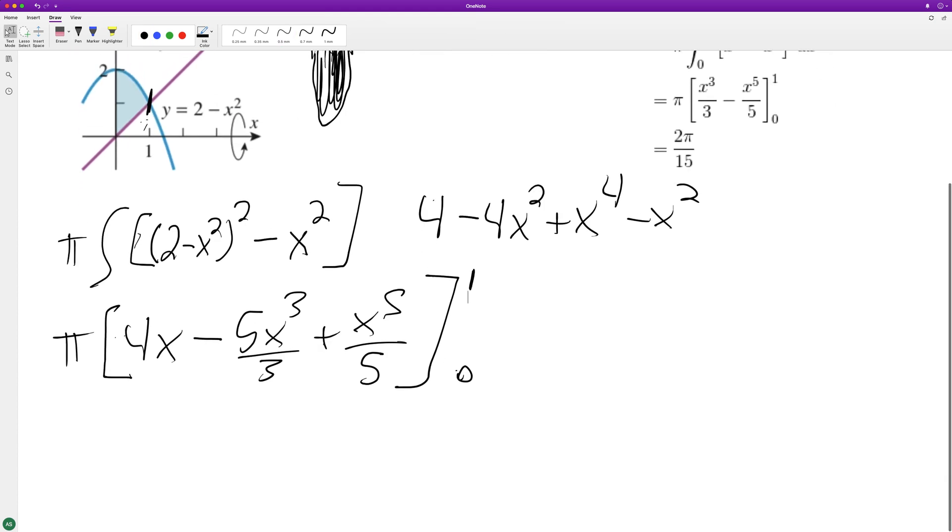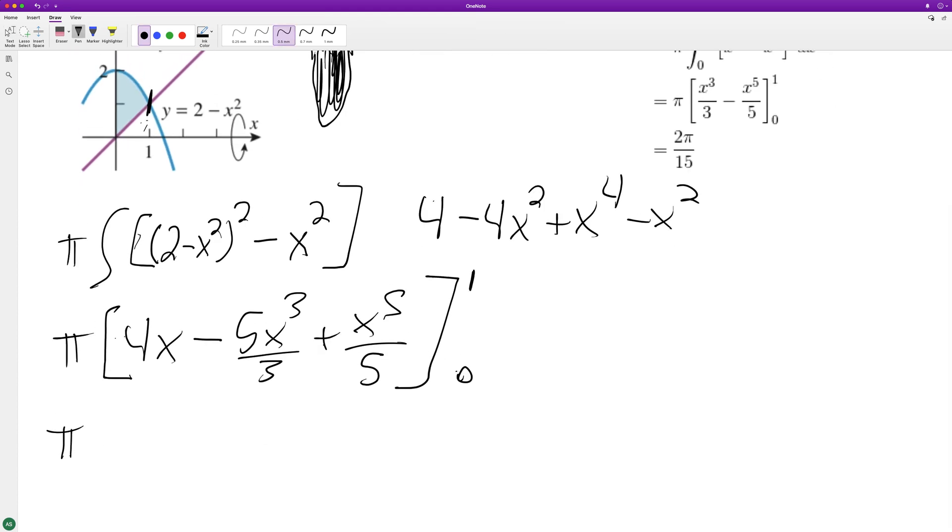I sure wrote that down a while ago. All right, so the nice thing about 0 is I know everything's going to be 0 in here, so it's just going to be, I'm just going to multiply by 1. So we get 4 minus 5 thirds plus 1 fifth.